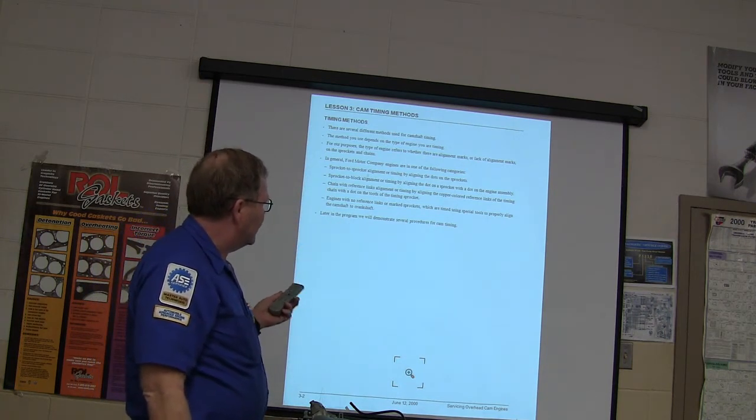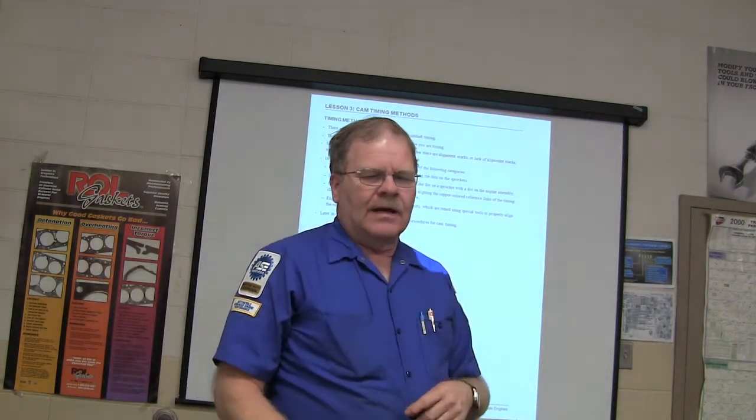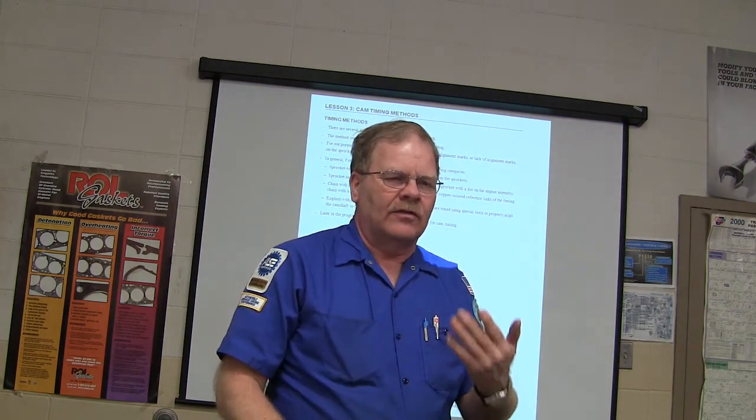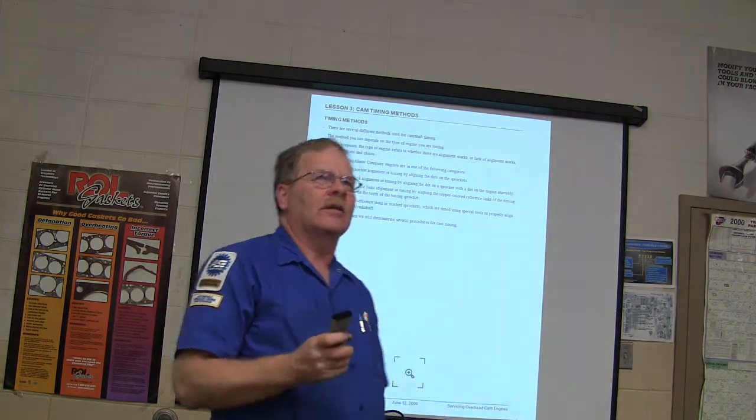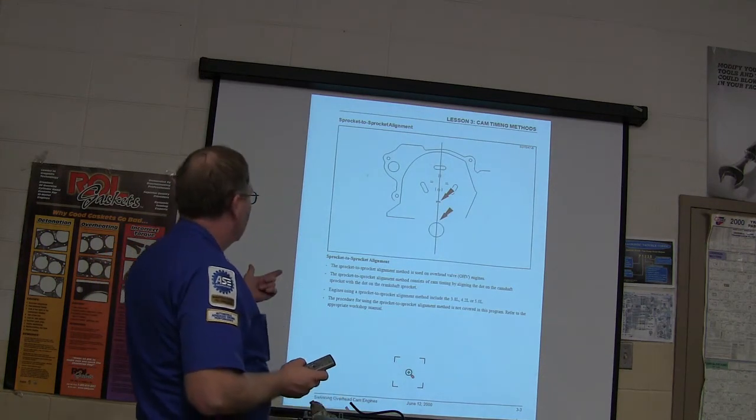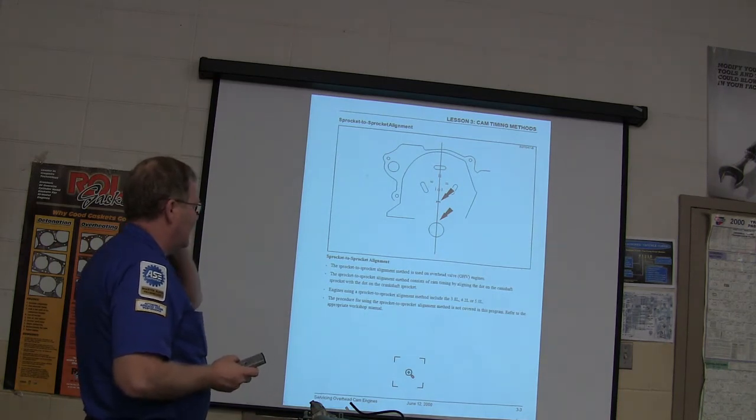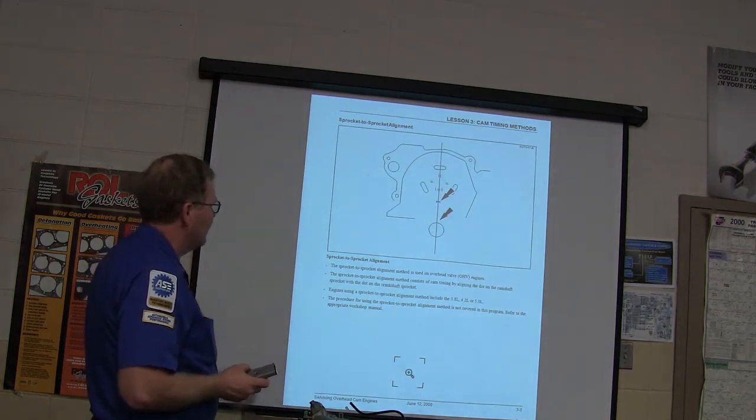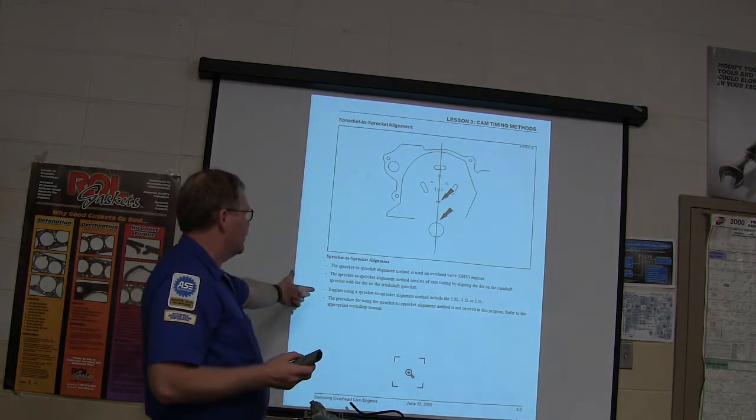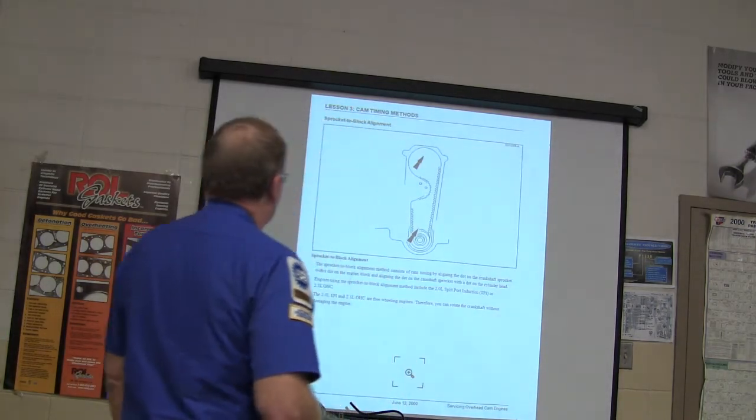Long and short of it is having those tools and knowing how to use them is really important. But something else you've got to recognize is looking at a situation where you're making sure that your tensioners are right and they're on there the proper way. If they're oil-filled tensioners, it's really important to make sure you've got them oriented the right way. There's your sprocket and sprocket alignment. Used for overhead valve engines. It consists of cam timing by lining the dot on the camshaft sprocket with a dot on the crankshaft sprocket. Using sprocket and sprocket alignment. In other words, you line the ones up on those two sprockets and you know that they're right.